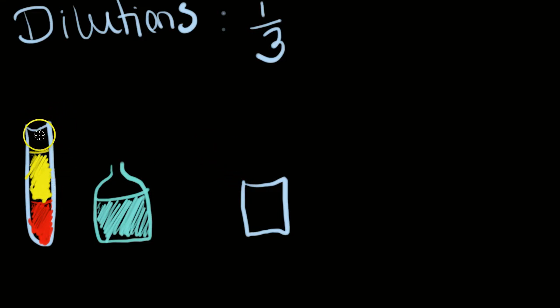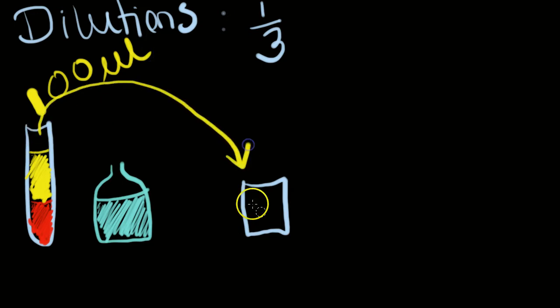The first thing you would do is get some sample out. Let's say we're going to get 100 microliters out, and we're going to take it and put it right here, 100 microliters of your plasma or serum into the sample cup.